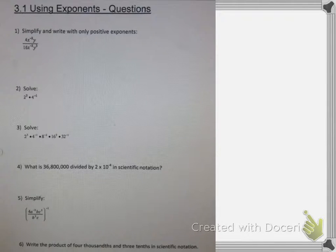Okay, so let's go through these 3.1 using exponents. Number one: simplify and write with only positive exponents. I've got some negative exponents up there, the x to the minus 2 and the x to the minus 3 in the denominator. So a negative exponent just means you switch it from either the top to the bottom or the bottom to the top.